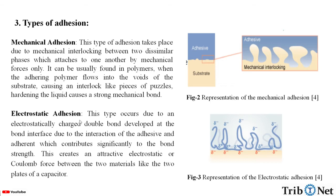Electrostatic adhesion: this type occurs due to an electrostatically charged double layer developed at the bond interface due to the interaction of adhesive and adherent, which contributes significantly to bond strength. This creates an attractive electrostatic or coulomb force between the two materials, like the two plates of a capacitor. Here we can see the representation of electrostatic adhesion.